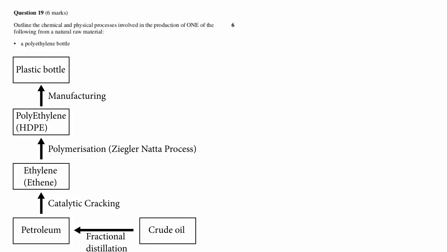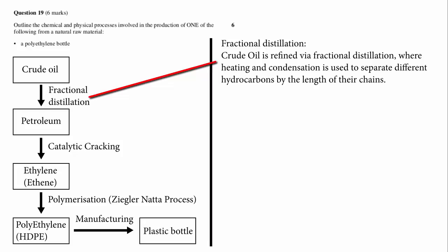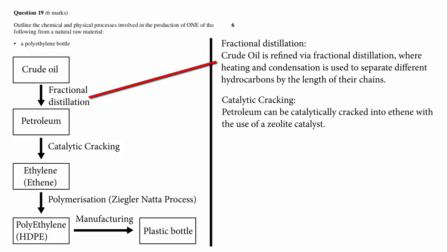Let's flip it around the right way, and then we need to fill in explanations next to each chemical and physical process. Each chemical process also gets a chemical equation. Crude oil is refined via fractional distillation, where heating and condensation are used to separate different hydrocarbons by the length of their chains. Petroleum can be catalytically cracked into ethene with the use of a zeolite catalyst. Now we need to write out a cracking equation with an ethene product.